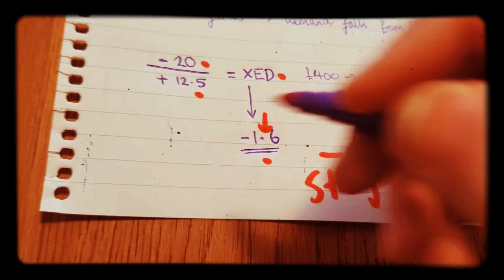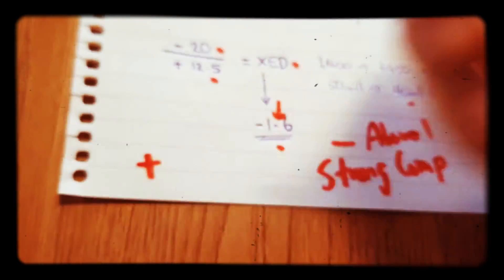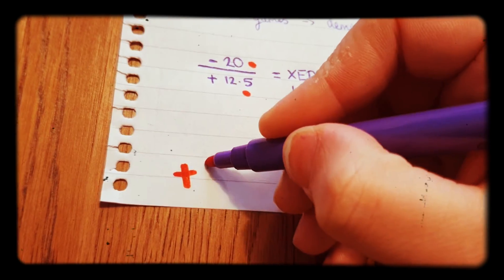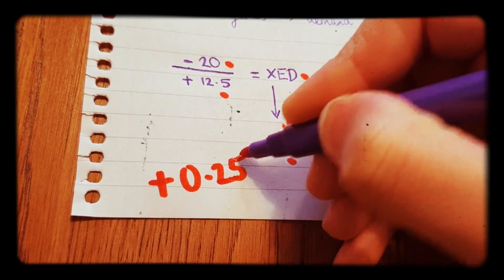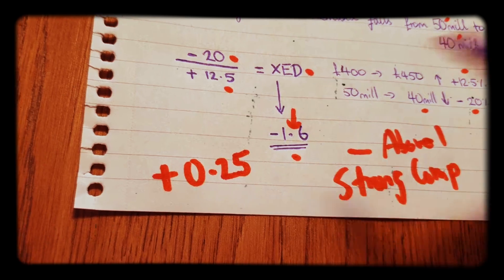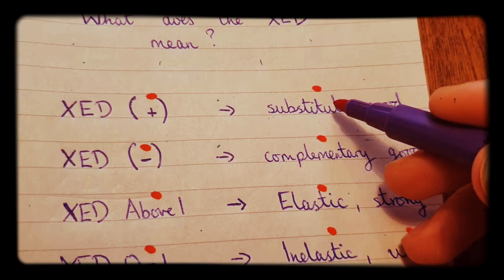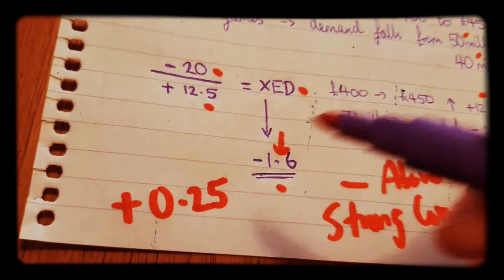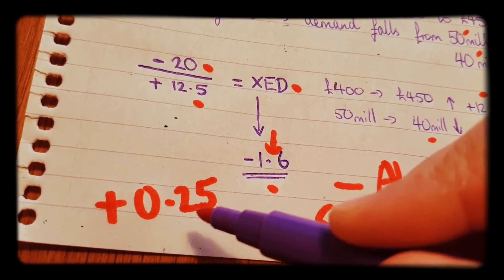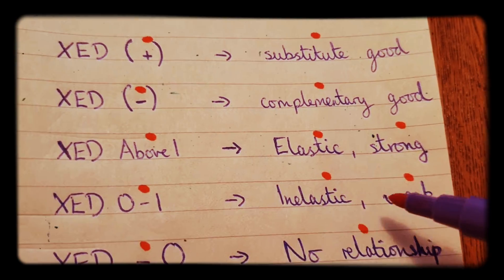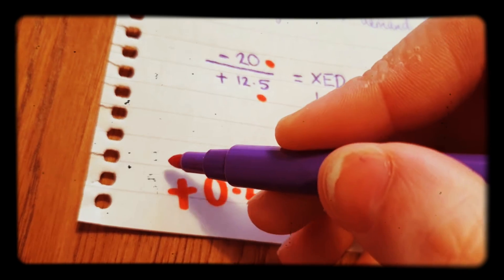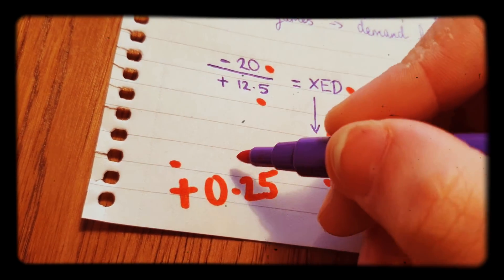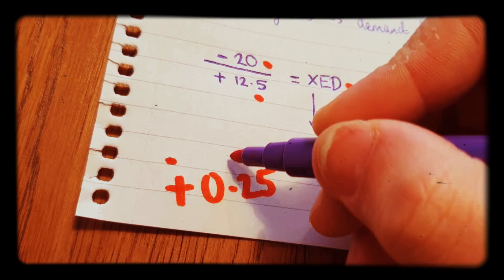Let's say if that was positive, if it was positive and it was 0.25, what would that be? Well, positive would be a substitute. And because it's between 0 and 1—0.25—it would be weak. So this would be a weak substitute because it's positive and between 0 and 1.